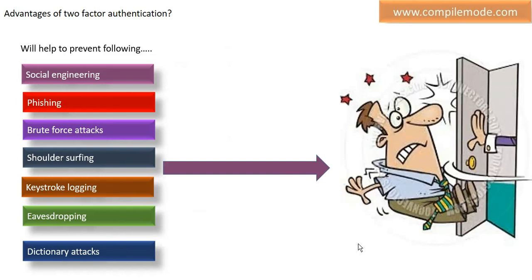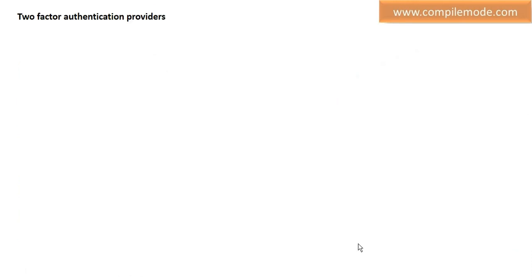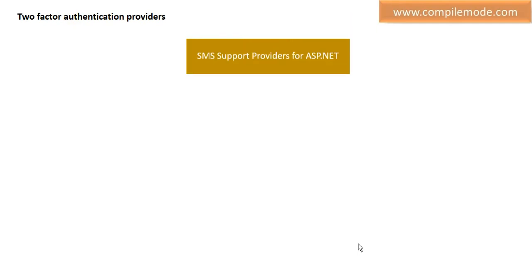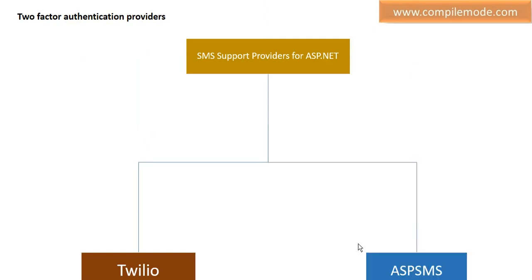Two-factor authentication providers: there are some providers which can be easily integrated into ASP.NET MVC or ASP.NET applications, both ASP.NET Core and ASP.NET Framework applications. For SMS support, there are two providers: Twilio and ASPSMS. Twilio provides a simple DLL or library that you can install through NuGet Package Manager. ASPSMS provides a WCF service or web service that you can consume in your applications to send SMS messages.